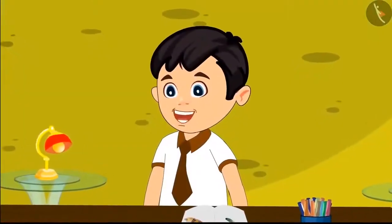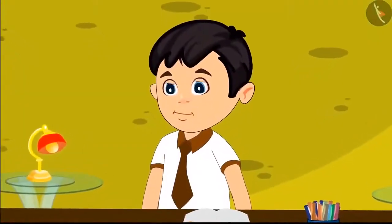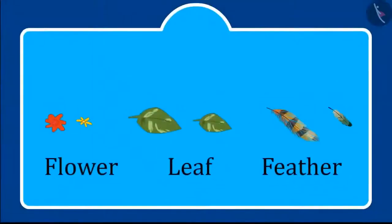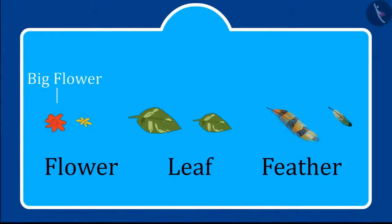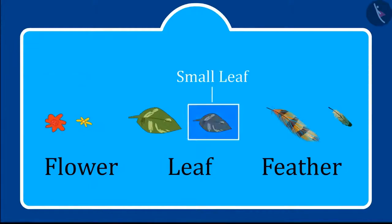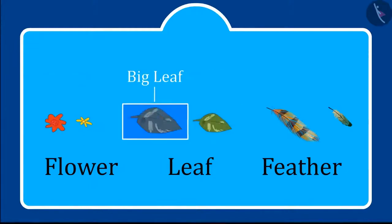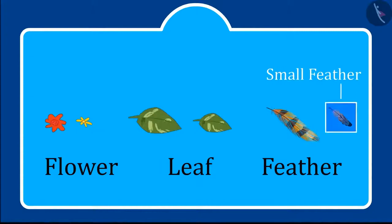Oh wow! All my work is done. Children, you saw how Chotu recognized big and small things. This is a small flower and this is a big flower. This is a small leaf and this is a big leaf. This is a small feather and this is a big feather.